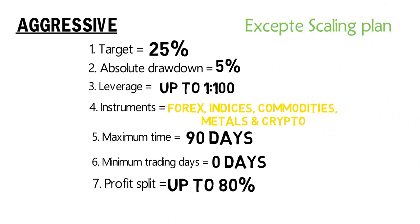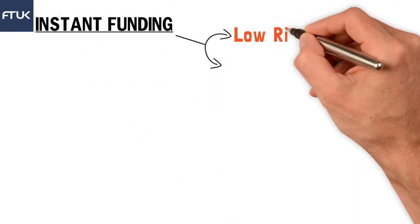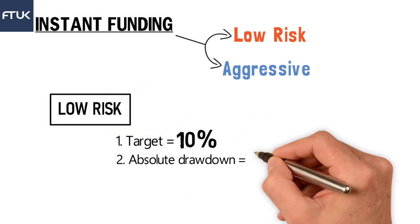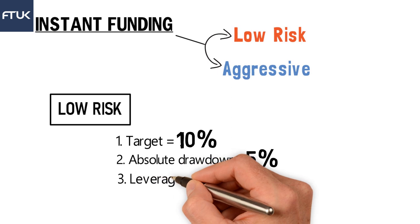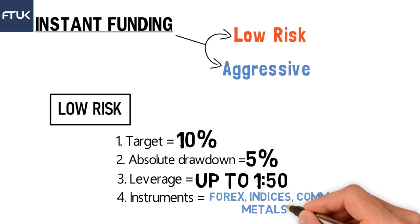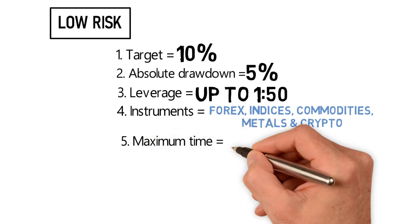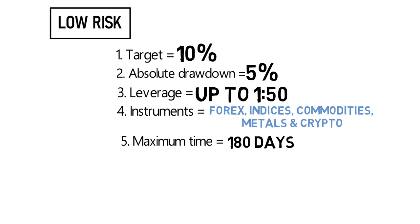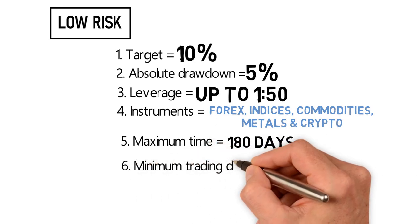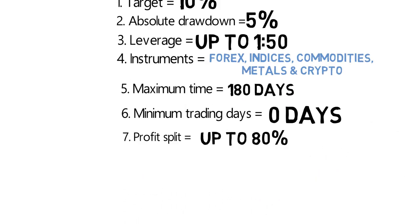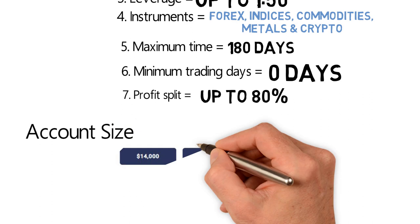Now let's look at instant funding. In instant funding they also have Lorix and Aggressive modes. In Lorix mode, the profit target is 10%, the absolute drawdown is 5%, and the leverage is up to 1:250. Instruments are forex, indices, commodities, metals, and crypto. The maximum time allowed to achieve the first milestone target is 180 days (six months), minimum trading days is zero, and profit split is up to 80%.